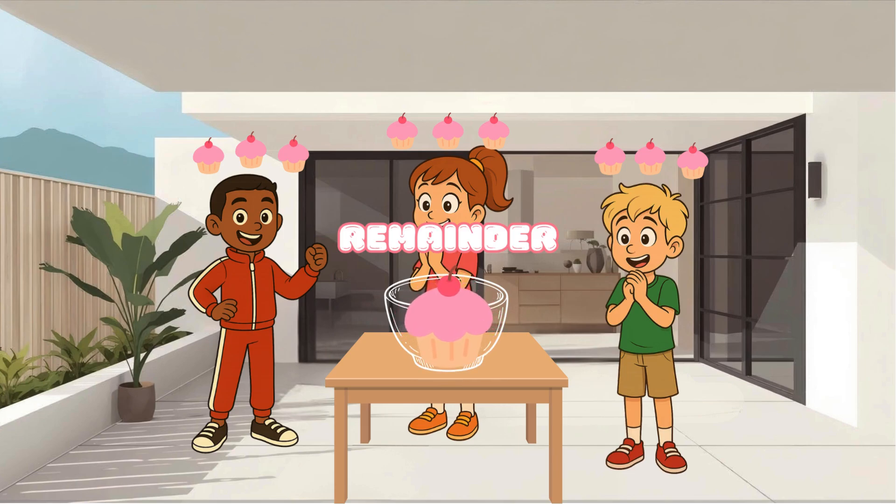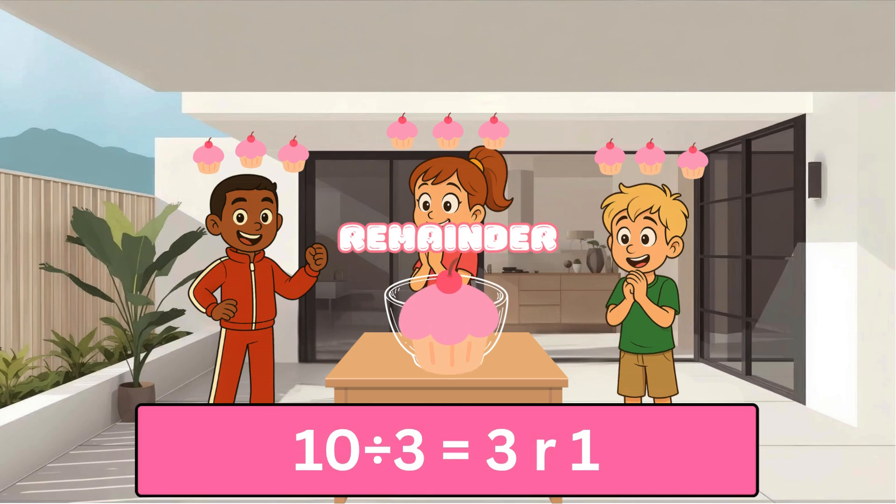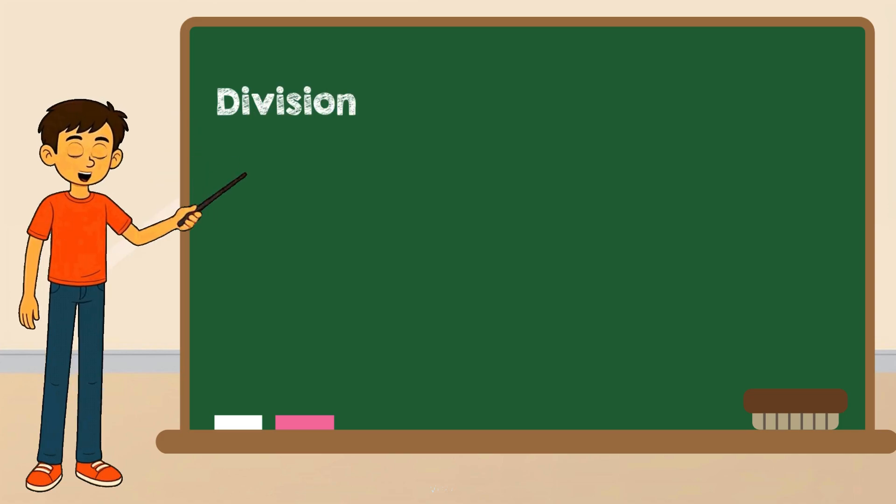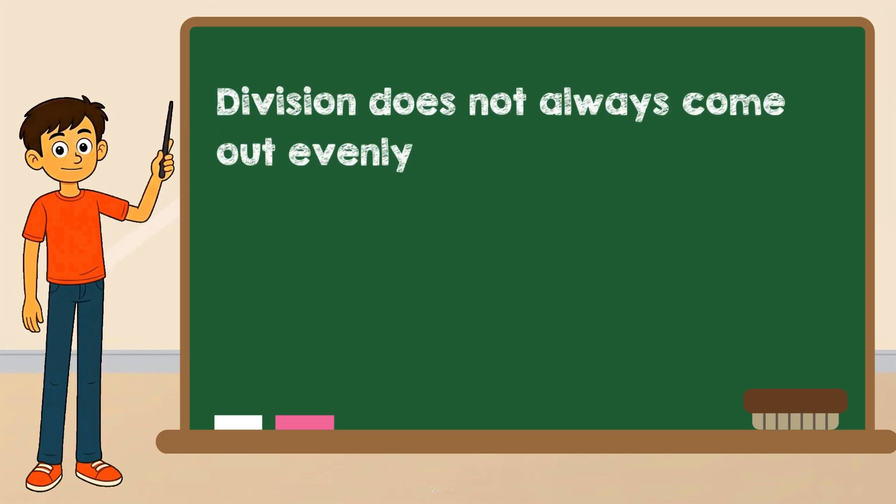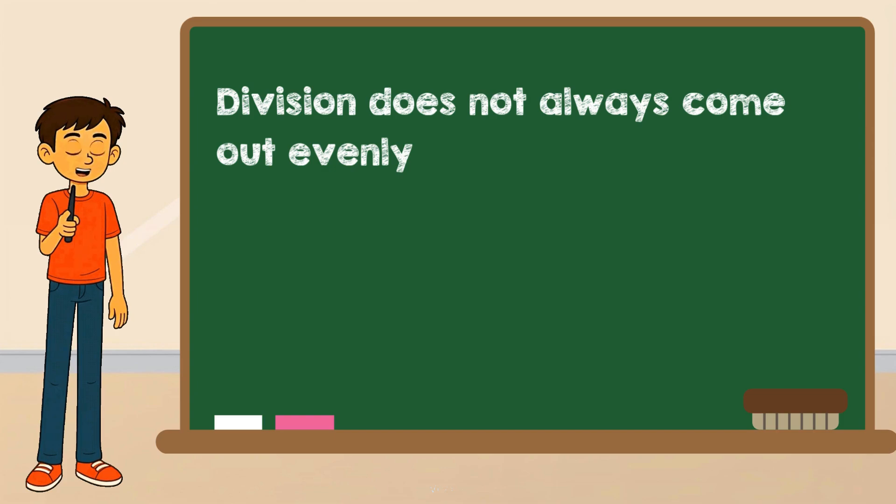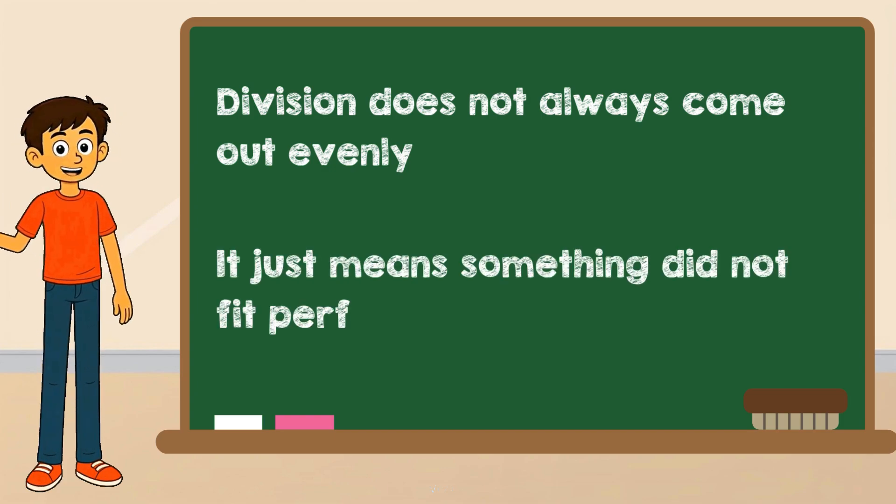That leftover piece is called a remainder. The answer is three remainder one. Ten divided by three equals three remainder one. Division doesn't always come out even, and that's totally fine. It just means something didn't fit perfectly.